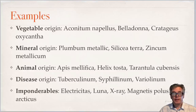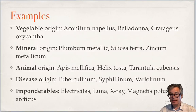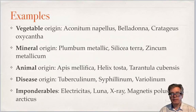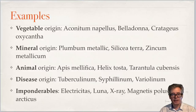Some examples of remedies you might know: from vegetable sources we have Aconitum napellus, known as aconite, belladonna, and Crataegus oxyacantha — a shrub. Minerals might include Plumbum metallicum, which is lead, Silicea terra, which is flint or silica, and Zincum metallicum, which is zinc. Animal origins might include Apis mellifica, which is the honeybee, and Helix tosta — toasted snail — a great remedy for slugs in the garden. We also have whole animals such as Tarantula cubensis, the Cuban tarantula.